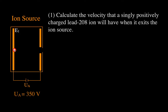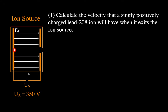We'll start with the ion source. The question is: calculate the velocity that a singly charged lead-208 ion will have when it exits the ion source. Here we have our positively charged ion — one electron has been removed. We have a positively charged plate and a negatively charged plate, and the ions move through an acceleration voltage of 350 volts between those two plates. The electric field goes from the positive to the negative plate, accelerating the ion in that direction.